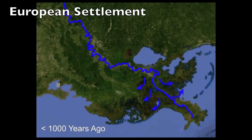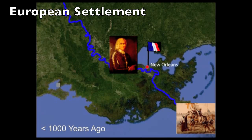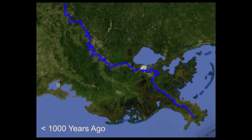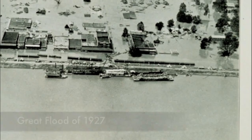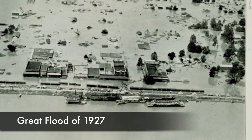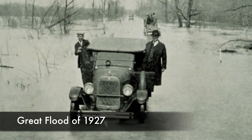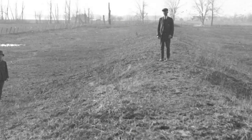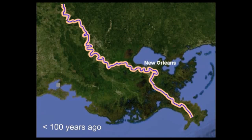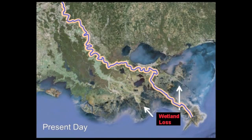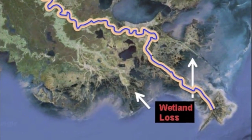Then Europeans arrived on the scene and established New Orleans in a bend of the Mississippi River. To prevent flooding, levees were built and extended as the city grew. In the 1920s, there were catastrophic floods such as the Great Flood of 1927. Disastrous flooding prompted the construction of levees which eventually extended the entire length of the lower part of the river. Levees prevented natural sediment delivery to the wetlands in the delta. Instead, sediment was shunted offshore into deep water, and the wetlands sitting atop compacting sediment began deteriorating.